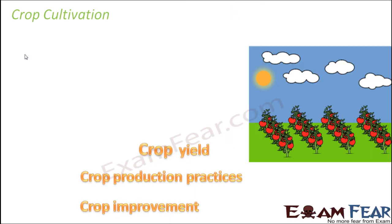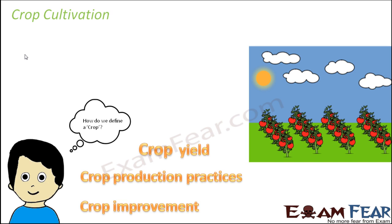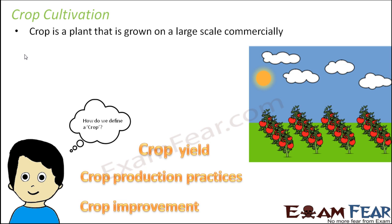Let us talk about crop cultivation. What is crop cultivation? First, how do we define a crop? A crop is a plant that is grown on a large scale commercially. A plant we grow in our garden in a small area — say one tomato plant — we call it a plant. But when we grow 10,000 tomato plants in a huge stretch of land, we call it a crop. So a crop is always a huge number of plants grown on a large scale for commercial purposes. If I am planting 10,000 tomato plants, that is definitely not for individual use — it is because I want to sell them.